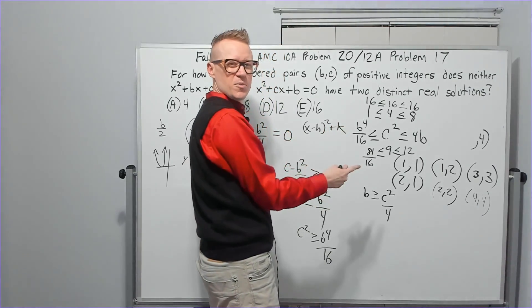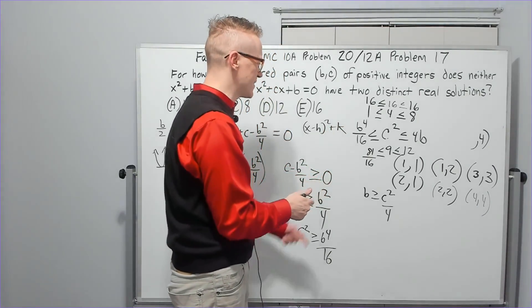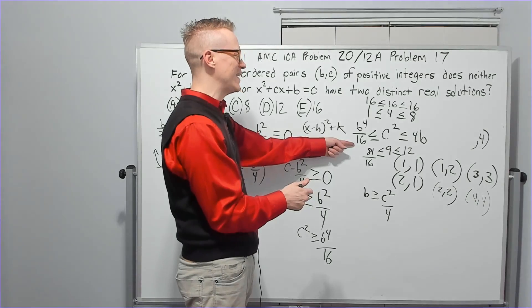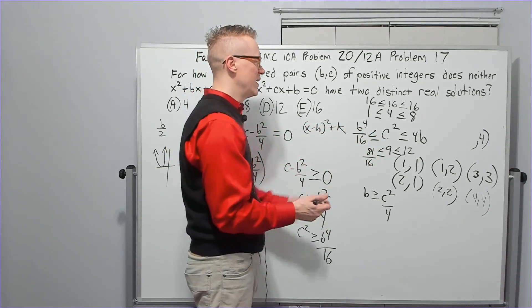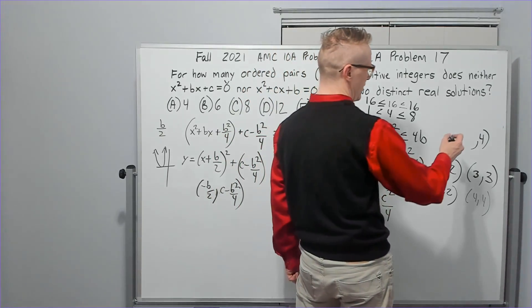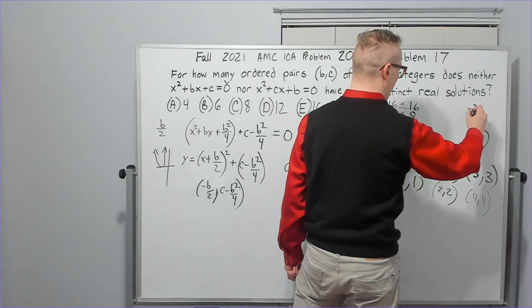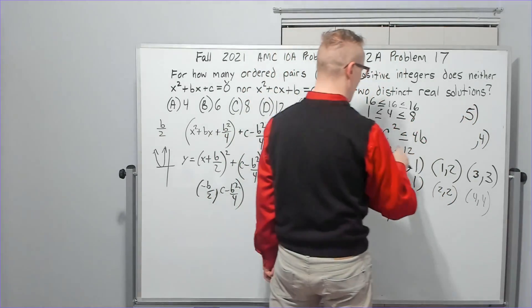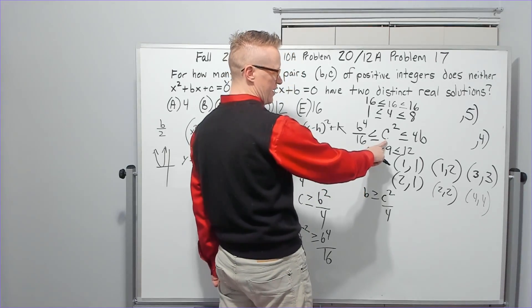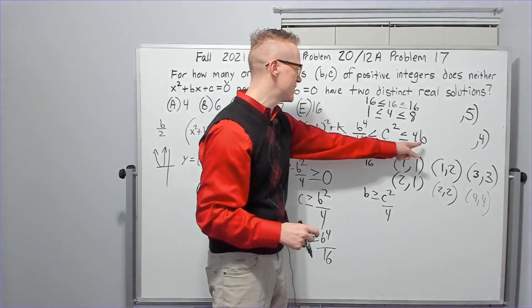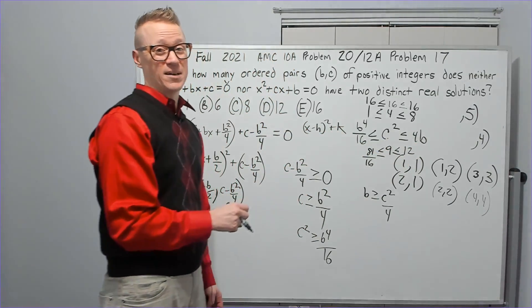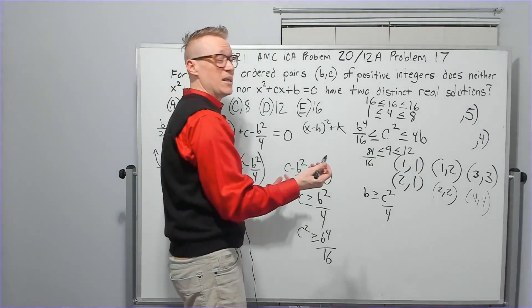Well, 5 to the 4th power is 25 squared. It's 625 over 16. It's a lot more than the 16 you would get here. And you can keep trying values. You're not going to find any that work. If I let c be 5, 25 here, 20 here doesn't work. What if I increased b to a 6?